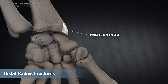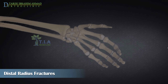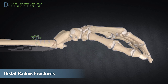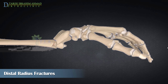When the radius breaks near the wrist, it is called a distal radius fracture. It is an extremely common type of fracture and is most commonly seen in older females and young males.